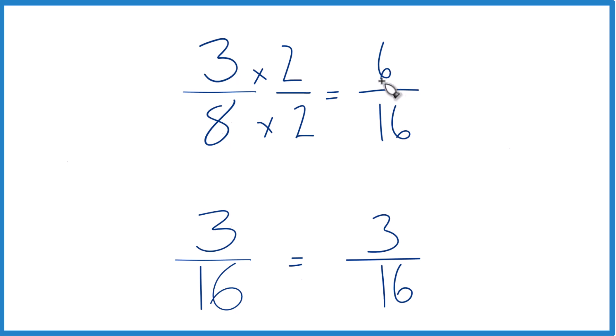3 times 2 is 6. And now you can see that 6 is larger than 3. We have the same denominator. So 6 16ths is larger than 3 16ths. 3 8ths, therefore, is larger than 3 16ths.